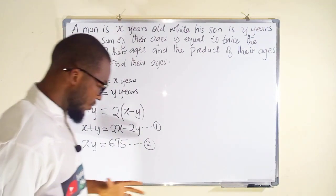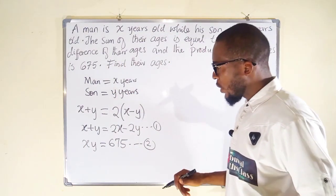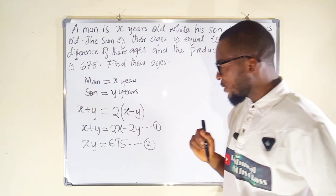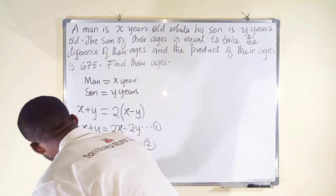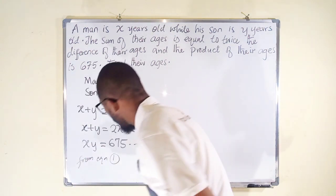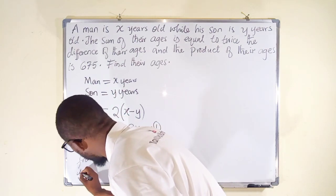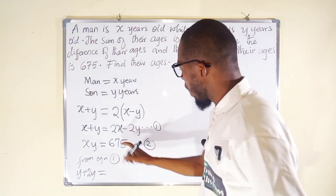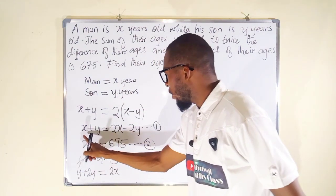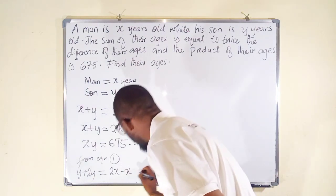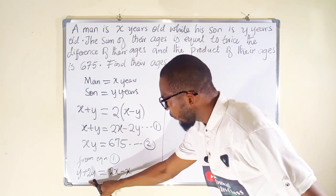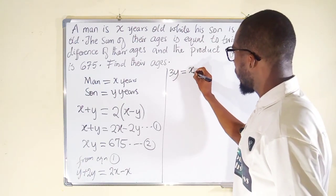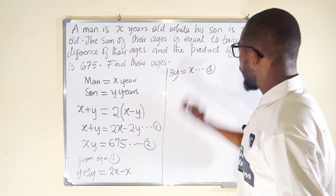Now we have two equations. From Equation 1, we bring like terms together. Taking negative 2y to the left it becomes positive, and taking x to the right it becomes negative. So we get: y + 2y = 2x − x, which simplifies to 3y = x. We can call this Equation 3.